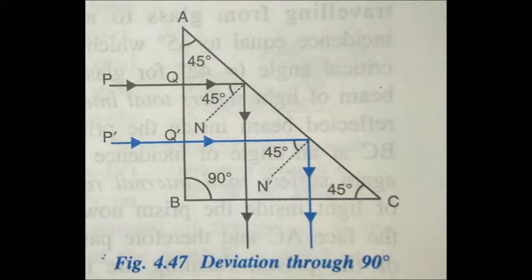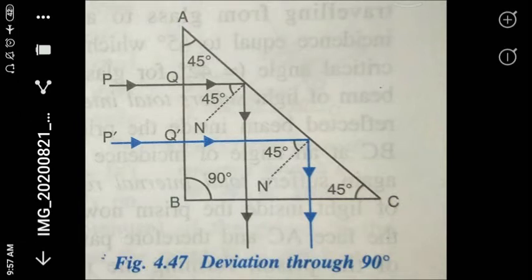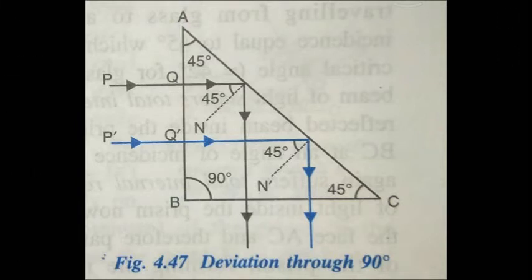We have a beam of light denoted by P', which is incident on the face AB of the reflecting prism. Since the angle of incidence on face AB is 0 degrees — normal incidence — the ray of light passes undeviated and hits the face AC of the prism.